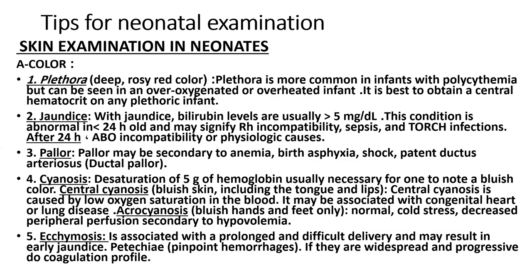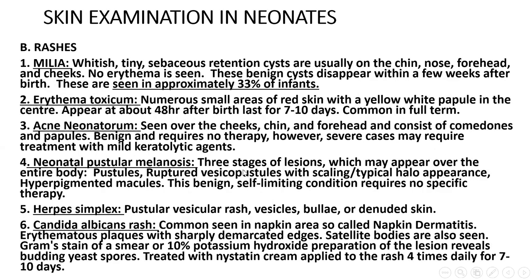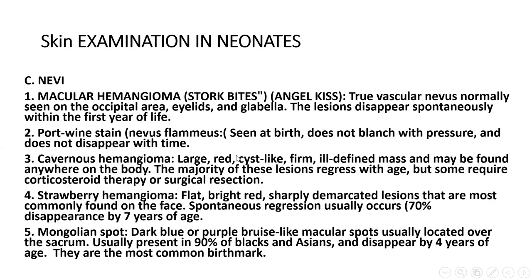Skin examination includes assessing color: normal, plethora, jaundice, pallor, central or peripheral cyanosis, acrocyanosis, or ecchymosis. We also look for rashes such as milia, erythema toxicum, neonatal acne, pustular melanosis, herpes simplex, or candida (napkin dermatitis). Birthmarks or nevi are noted: macular hemangioma, port wine stain, cavernous hemangioma, strawberry hemangioma, and Mongolian spot — the most common birthmark in neonates.